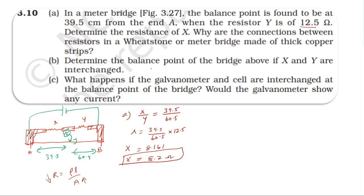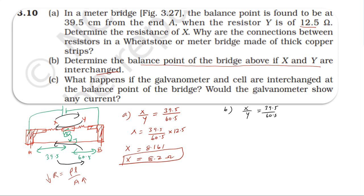Now we determine the new balancing point if X and Y are interchanged — X placed where Y was and Y placed where X was. When X and Y are interchanged, the new balance point becomes 60.5 centimeters instead of 39.5 centimeters, since X/Y = 60.5/39.5.